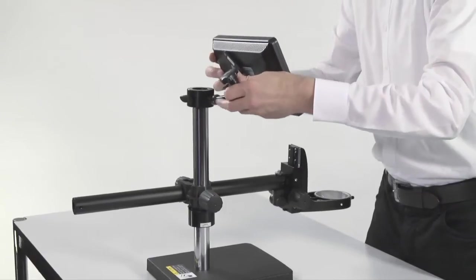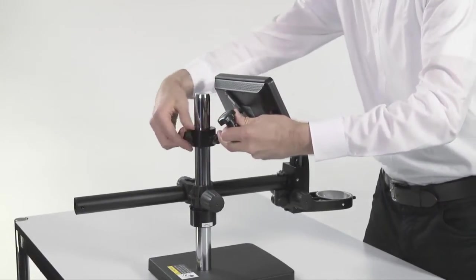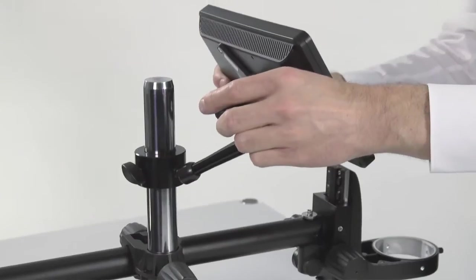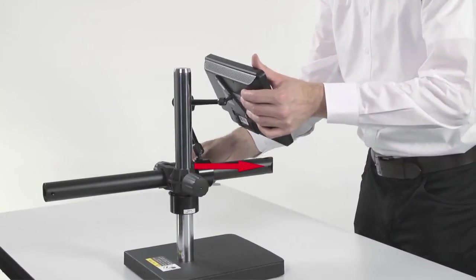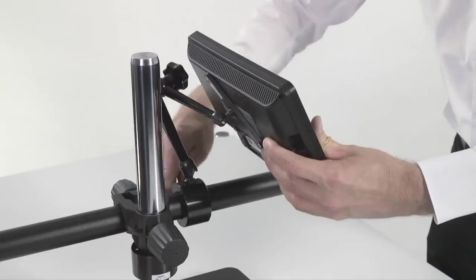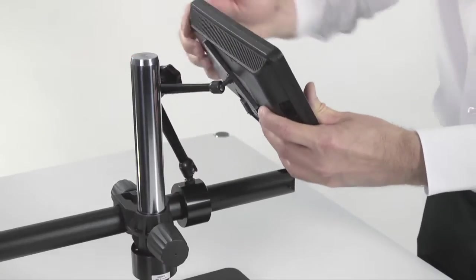If you are using the stand mount monitor, simply slide the monitor assembly onto the vertical column. Or, before you install the microscope carrier, simply slide the assembly onto the horizontal arm and position it where you like.